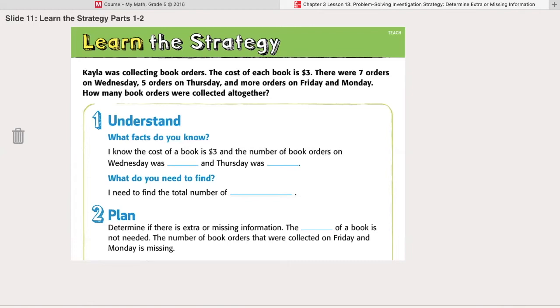When you're solving a word problem, you're not necessarily going to write out separately what facts you have, but you might, and you should either highlight or underline. So let's look at what facts we have. We have that the cost of a book is $3. We have that there were seven orders on Wednesday, and five orders on Thursday.